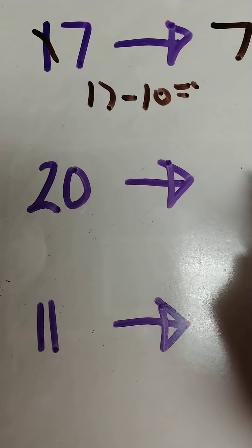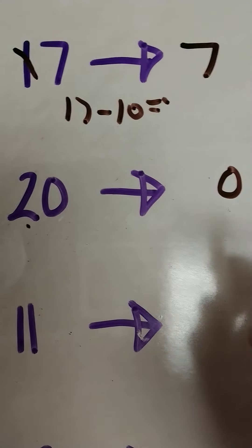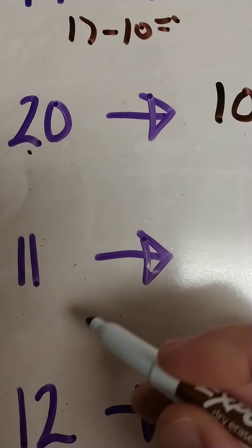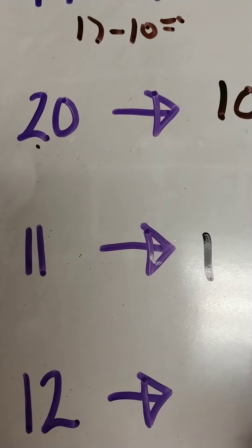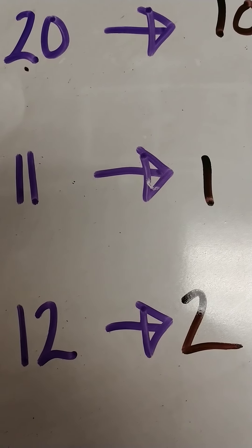The next one, just take off one 10. So we have two tens there, we get rid of 1, which equals 10. And then we have 11, just get rid of a 10, and we have 1. And 12, get rid of the 10, and we have 2.